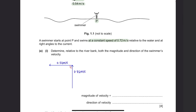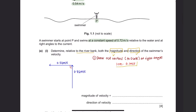Question A part 1: Determine relative to the riverbank both the magnitude and direction of the swimmer's velocity. In order to determine the magnitude and direction, you have to draw out your vector to scale. I will use 1 cm to 0.1 meters per second. That means the swimmer's speed would be 7.2 cm and the river current would be 5.4 cm. The next step is to complete this triangle and you will get your resultant velocity.